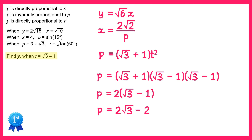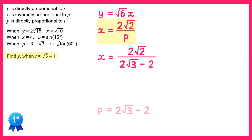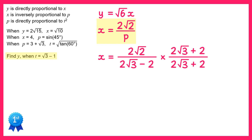We can now substitute this p value into the formula for x. So x equals 2 root 2 divided by p, which is 2 root 2 divided by (2 root 3 minus 2). We rationalise the denominator by multiplying by (2 root 3 plus 2) over (2 root 3 plus 2). On the top we get 2 root 2 times 2 root 3, which is 4 root 6, and 2 root 2 times 2, which is 4 root 2.